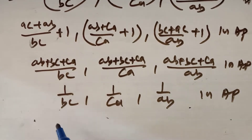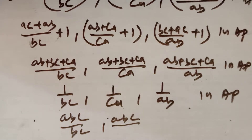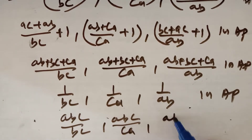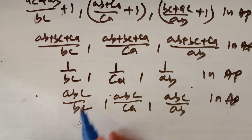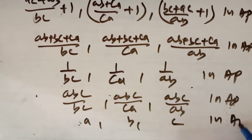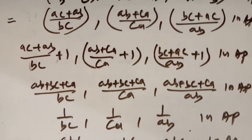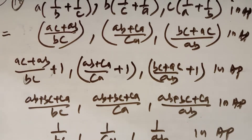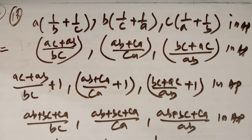Now if you multiply all the terms by abc, the terms will remain in AP. Multiplying 1/bc, 1/ca, 1/ab by abc gives a, b, c in AP. So we have used the property that if we add, subtract, multiply, or divide with the same number to all terms of an AP, the terms remain in AP. This is question number 16.